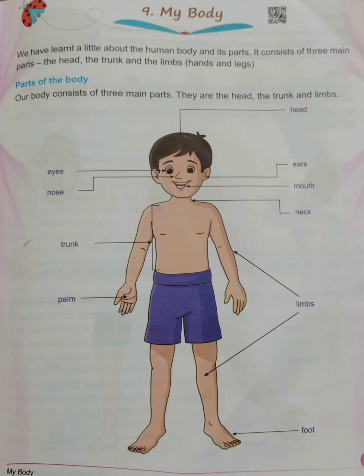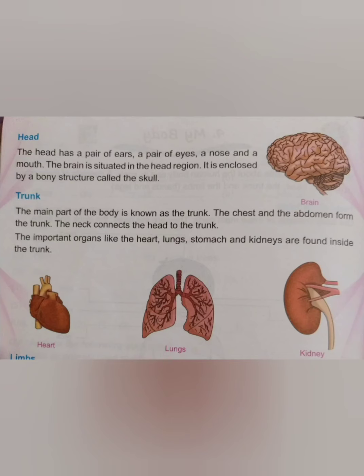From these three main body parts, first one we will see — the head. Turn your page and open page number 54. The head has a pair of ears, a pair of eyes, a nose and a mouth.